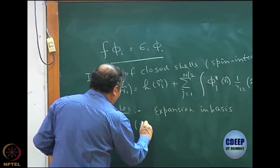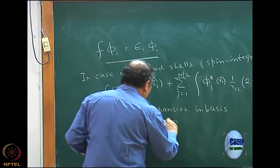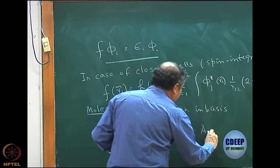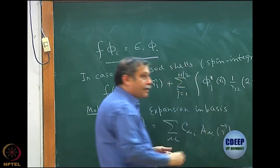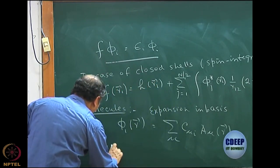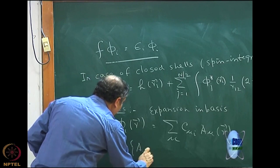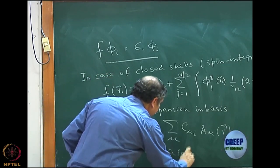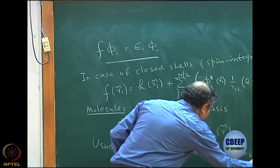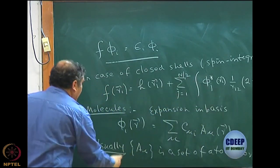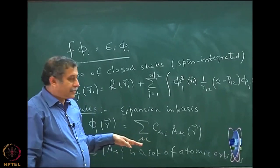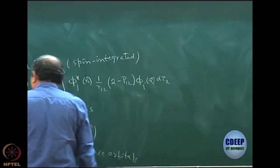We write φ_i(r₁) = Σ_μ C_μi · χ_μ(r), where χ_μ is a basis usually of atomic orbitals, though mathematically it can be any complete set. The chemistry dictates that a set of atomic orbitals makes convergence faster. Since we are expanding in a finite basis of M functions, the Hartree-Fock itself is an approximation, and the basis expansion adds one more level of approximation.